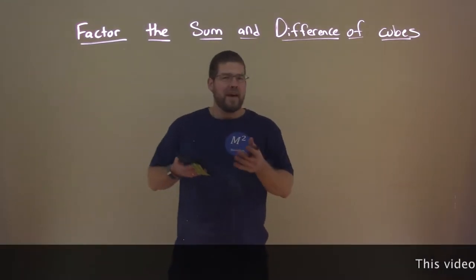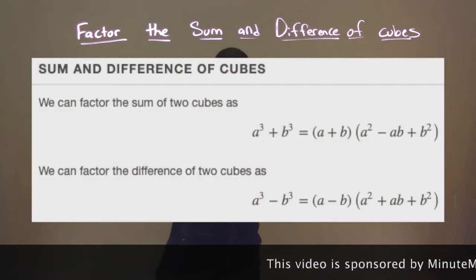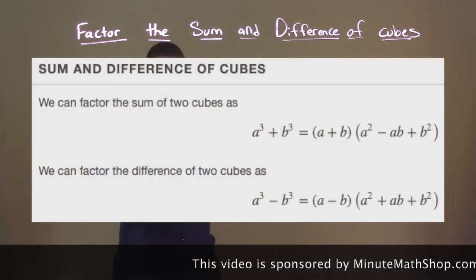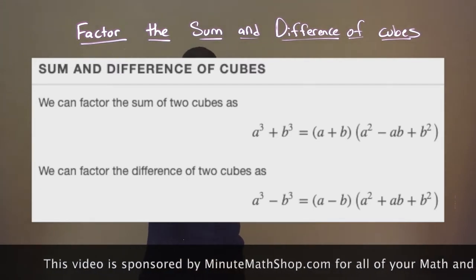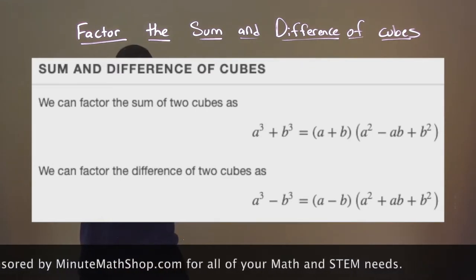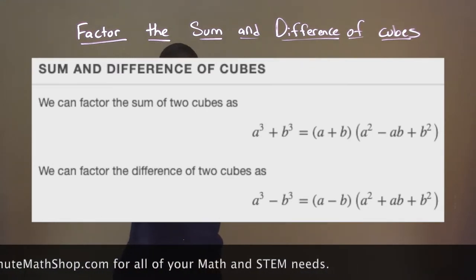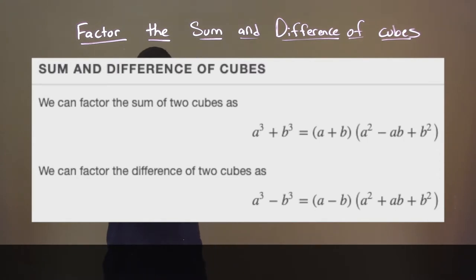So, what are the definitions for the sum and difference of cubes? Well, we can factor the sum of two cubes as such: a to the third plus b to the third equals a plus b times a squared minus ab plus b squared. We can factor the difference of two cubes as a to the third minus b to the third equals a minus b times a squared plus ab plus b squared.